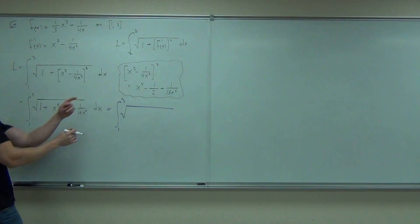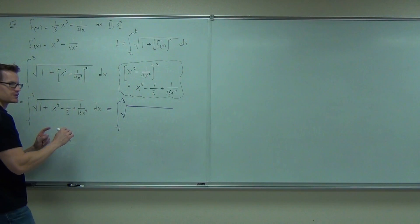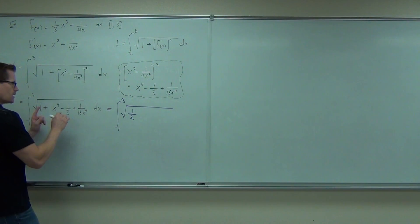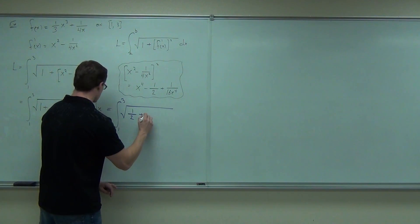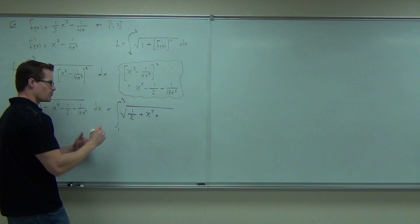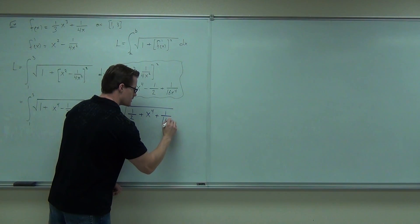We'll still be going from one to three. We'll still have a square root and a dx. Inside the square root, I'm going to combine some like terms. I'm going to have one minus one half is going to give me one half.